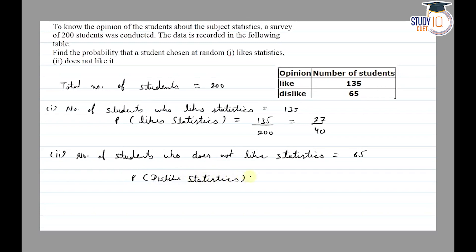So we have our favorable outcome is 65 and total number of outcomes is 200. If we cancel out by 5, then it will be 13 upon 40. So the probability that students like statistics is 27 upon 40, and who does not like it is 13 upon 40. Thank you.